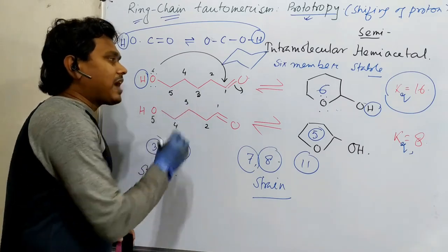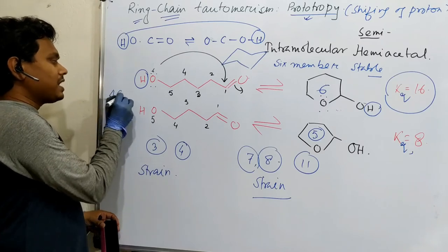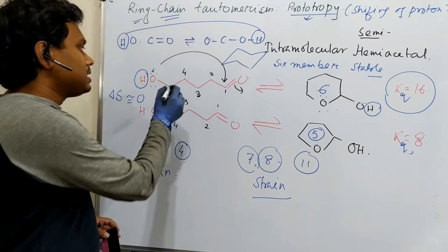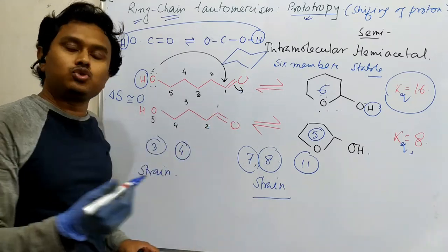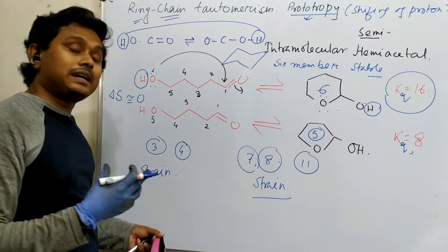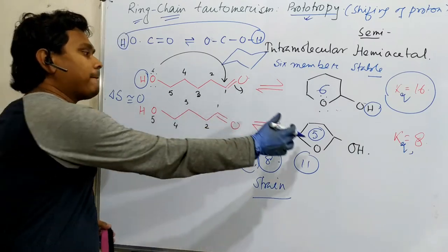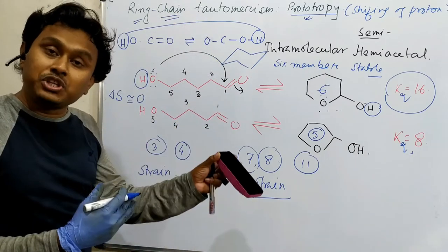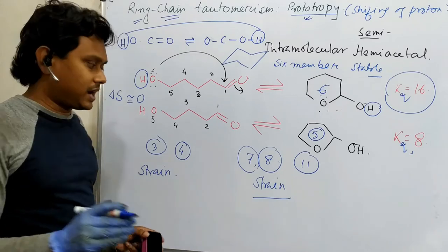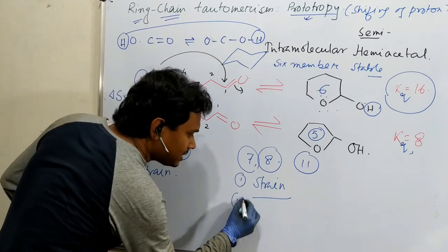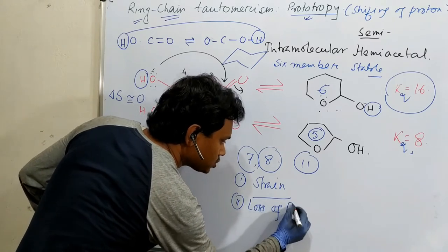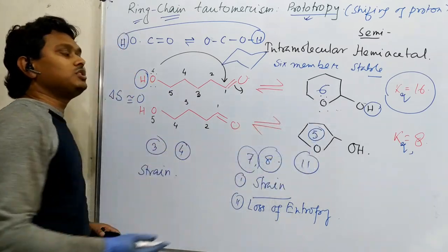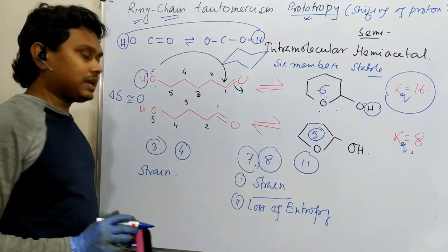Actually, delta S is not exactly 0. Some entropy loss is there, because open chain is converted into closed chain, so restriction of rotation is there. But, that is not significantly high, up to 6. But, if you go beyond 6, what happens? This long chain is very long. So, this entropy change, is a significant factor. So, point number 1, strain. Second is loss of entropy. So, these two factors are responsible, for lesser extent of this ring chain, tautomerism, for higher rings.